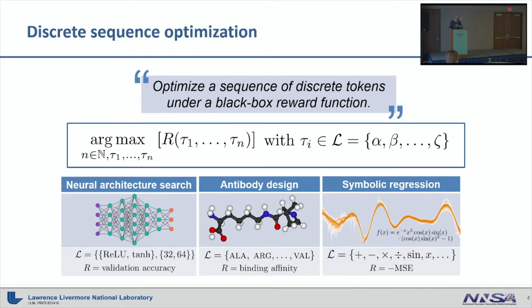You can also imagine this for antibody design, when the library consists of proteins and the reward is the binding affinity. And then we also have symbolic regression, which I will use as an example in the following slides, where you have the library of mathematical operators and the reward function is the mean squared error.